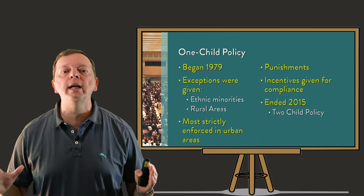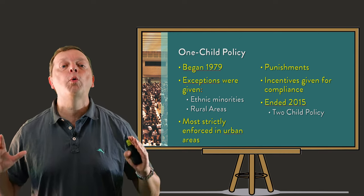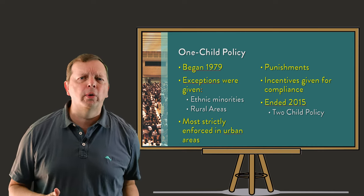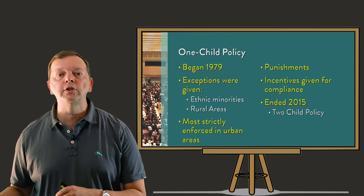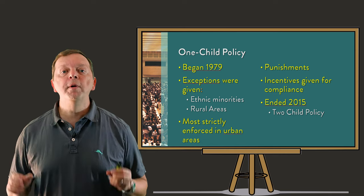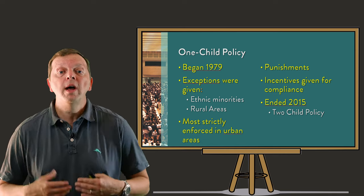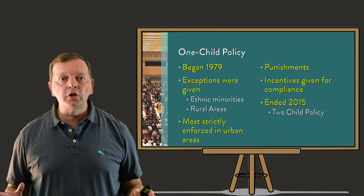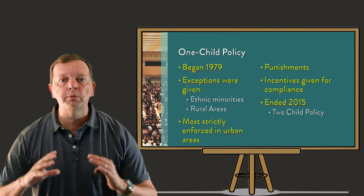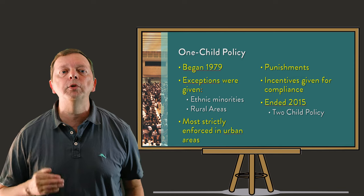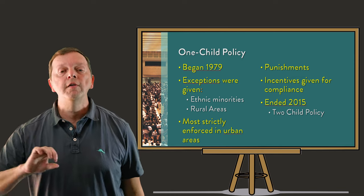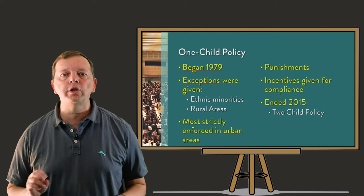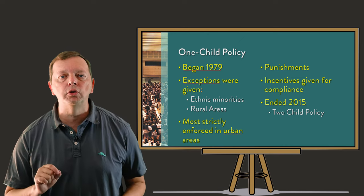Especially in urban areas, Chinese families were only allowed to have one child. There were exceptions for ethnic minorities and those in rural areas, who could have up to two children. Violations of this law would find you fined up to two years' pay. The government also made promises that if China would slow its population, it would be able to provide better services for all its people. After 35 years, the government finally ended the One Child Policy in 2015.